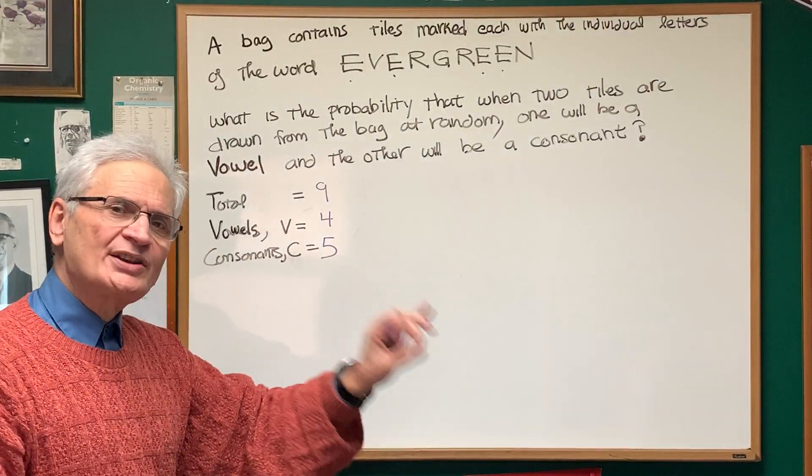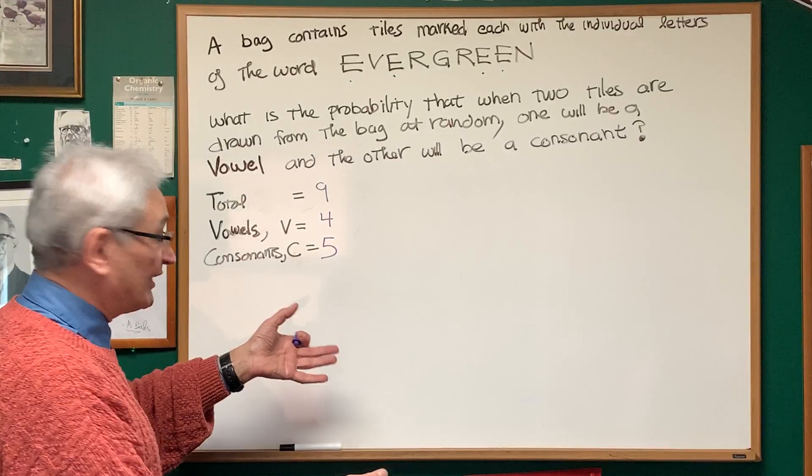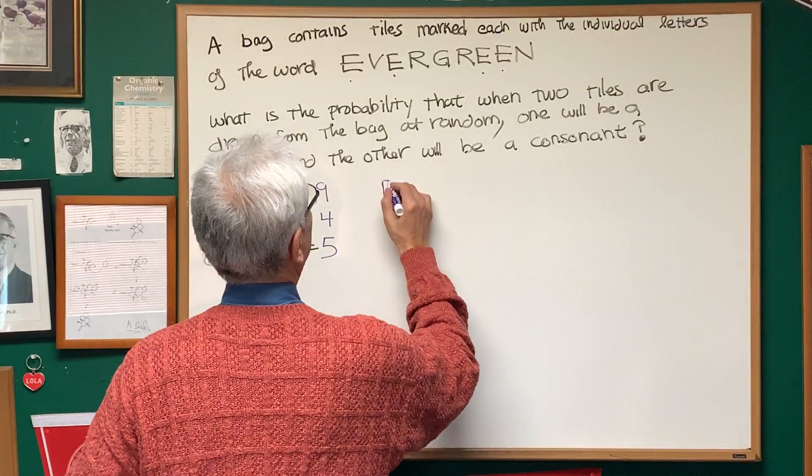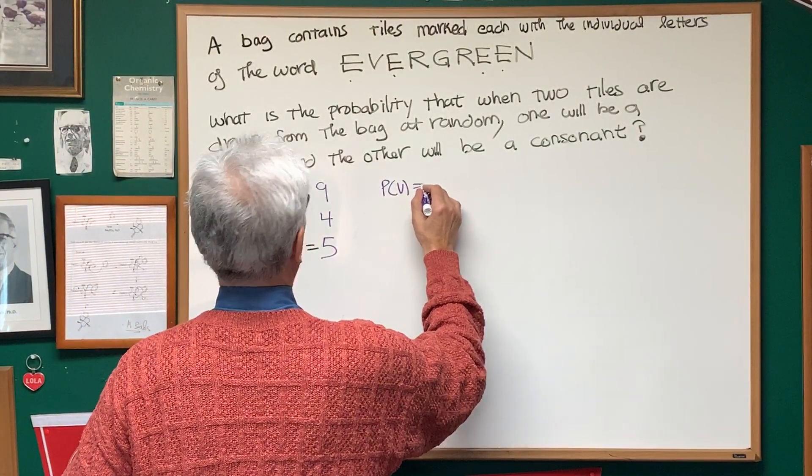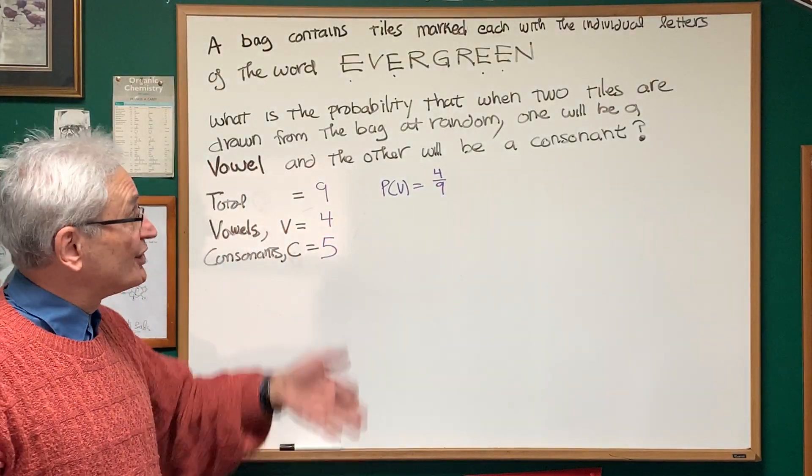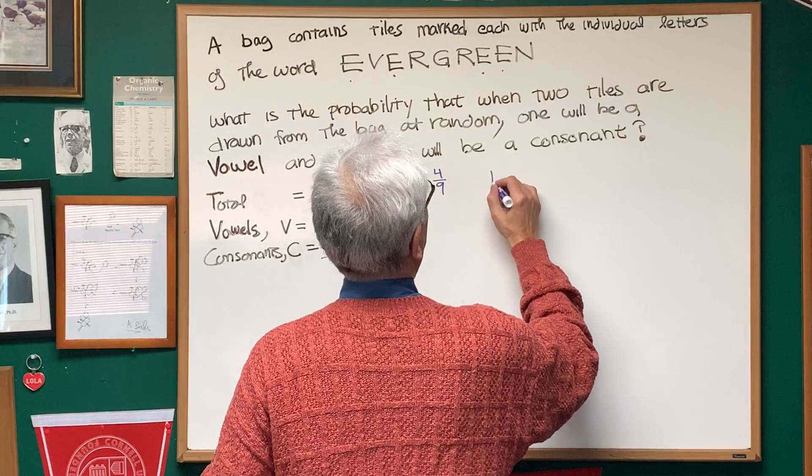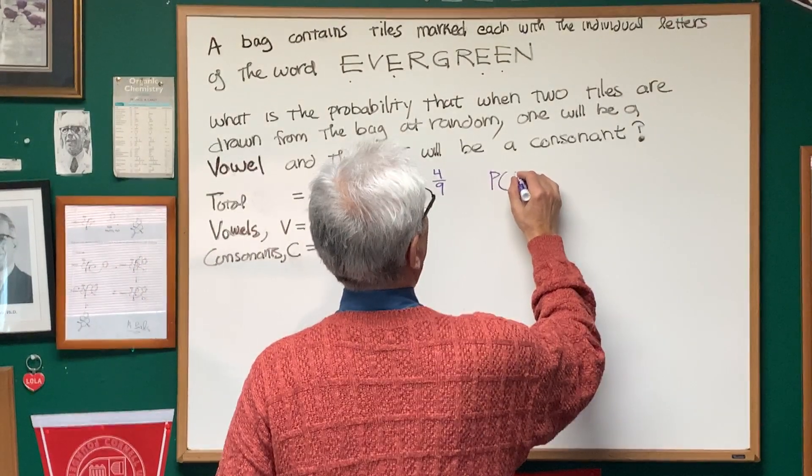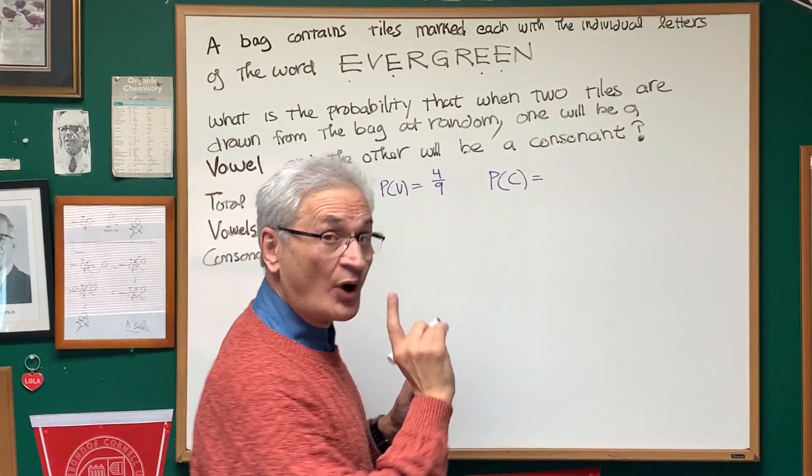Well, if I take one tile out of the bag, what's the probability that it's going to be a vowel? The probability that it's going to be a vowel is the total number of vowels divided by the total number of tiles, four ninths.